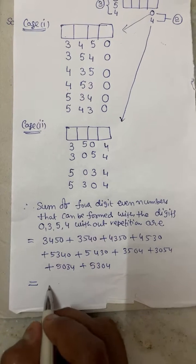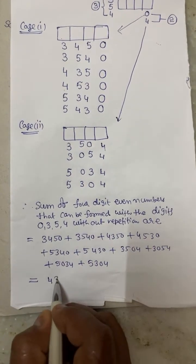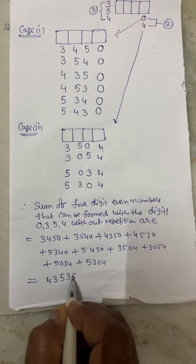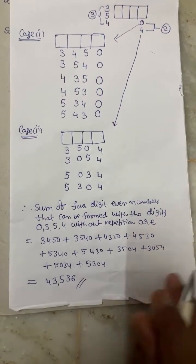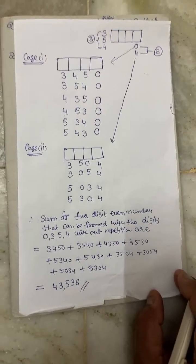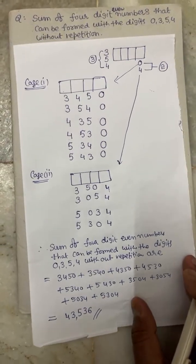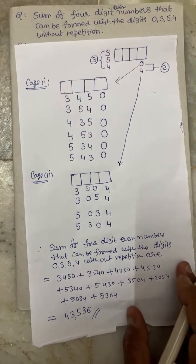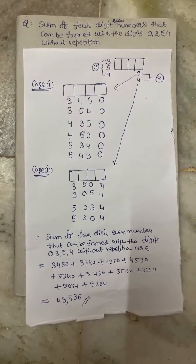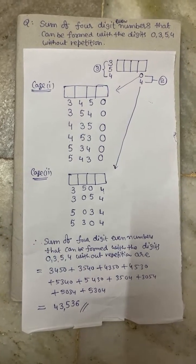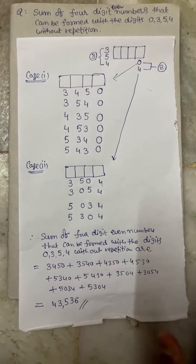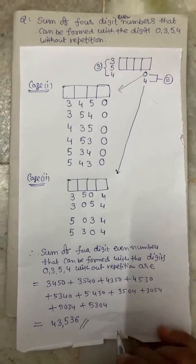The total comes to 43,536. So the sum of four-digit even numbers that can be formed with the given digits 0, 3, 5, 4 without repetition is 43,536. I hope you understand, students. Thank you — Maths with Panindra.